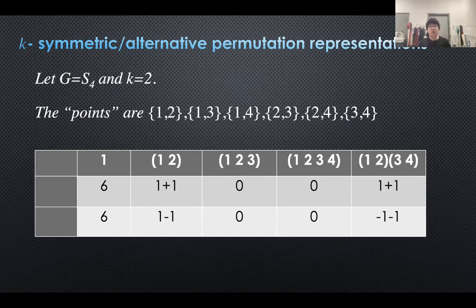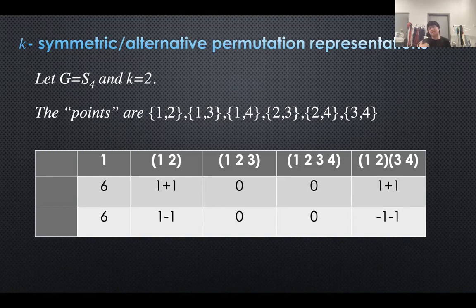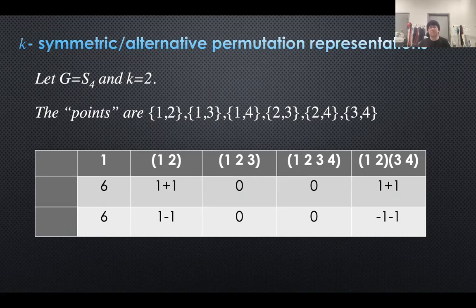For the alternative permutation representation: the identity fixes all points, so the answer is 6. For (1 2), both {1,2} and {3,4} are fixed, but (1 2) acts as an odd permutation on {1,2} and as an even permutation (identity) on {3,4}, giving us +1 + (−1) = 0. For (1 2 3) and (1 2 3 4), no points are fixed, so the answer is 0. For (1 2)(3 4), two points are fixed, but this element acts as an odd permutation on both {1,2} and {3,4}, giving (−1) + (−1) = −2.